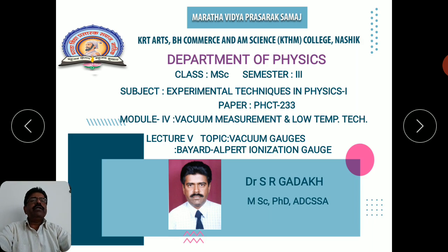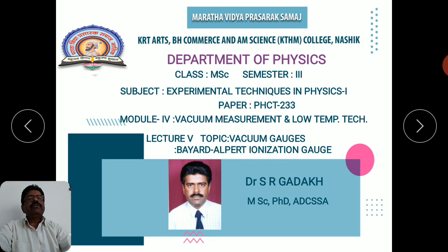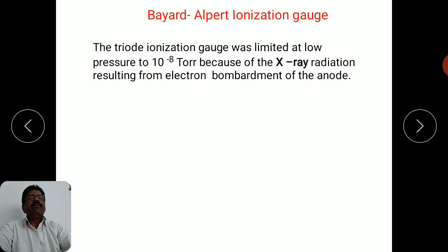The solution was found by a pair of scientists, Bayard and Alpert, by inventing another type of ionization gauge known as the Bayard-Alpert ionization gauge. Let us see now what this Bayard-Alpert ionization gauge is.